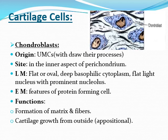In the perichondrium we have the outer fibrous layer and inner chondrogenic layer surrounding the cartilage. The inner chondrogenic layer forms chondroblasts, and the chondroblasts form new cartilage from outside — increasing the diameter of the cartilage. This process is known as appositional growth.